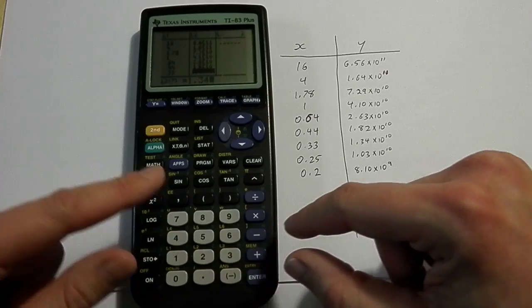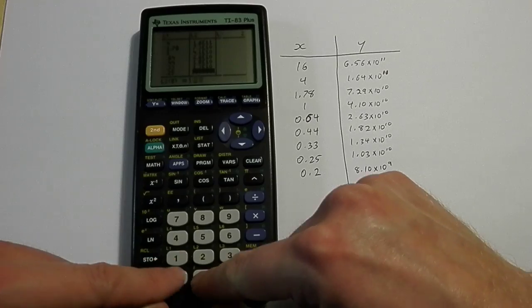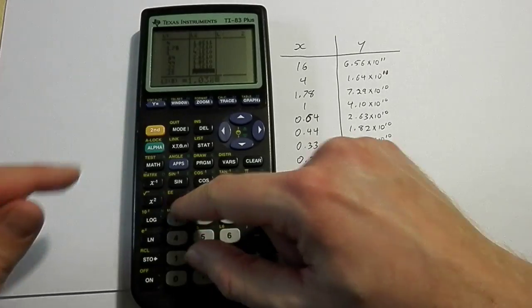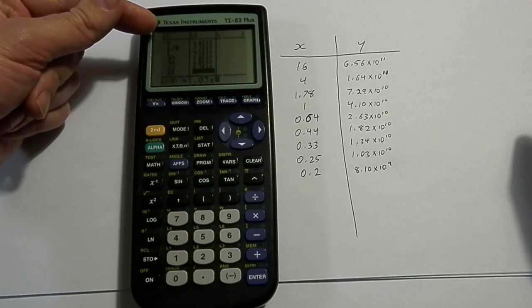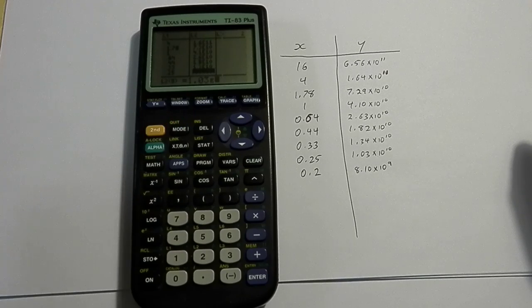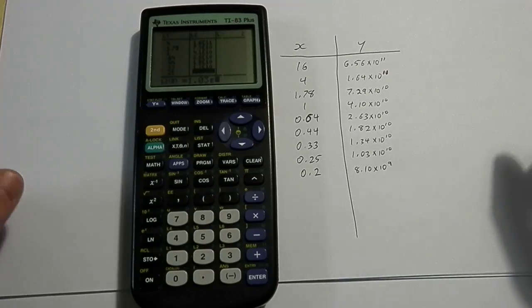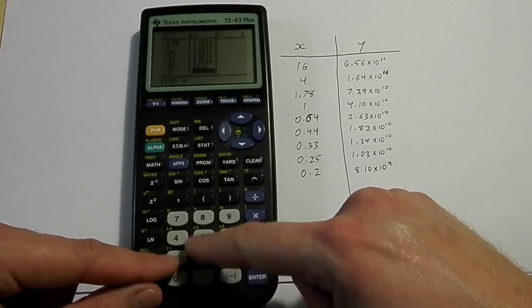One other thing I should mention while I'm doing this is that if you already had some numbers in here, and you needed to clear them out, what you can do is just use the arrow keys to scroll up to the very top, and I mean very top, where it's L1 and L2. And when you're on top of those, you just hit the clear button, and it'll get rid of anything that you've typed into that column previously. That way you're ready to go for a brand new question if you need to.